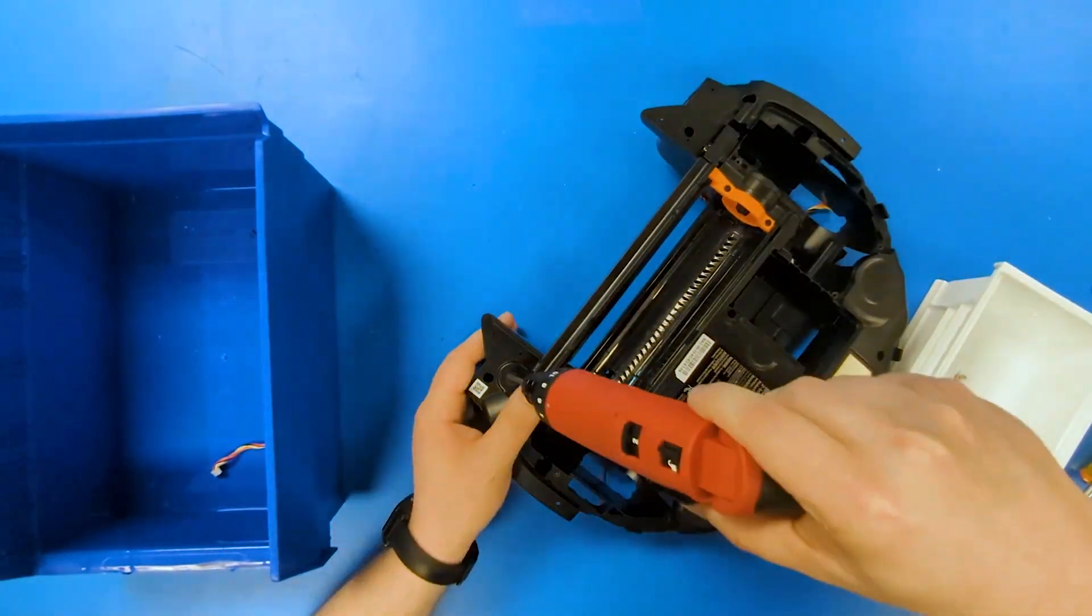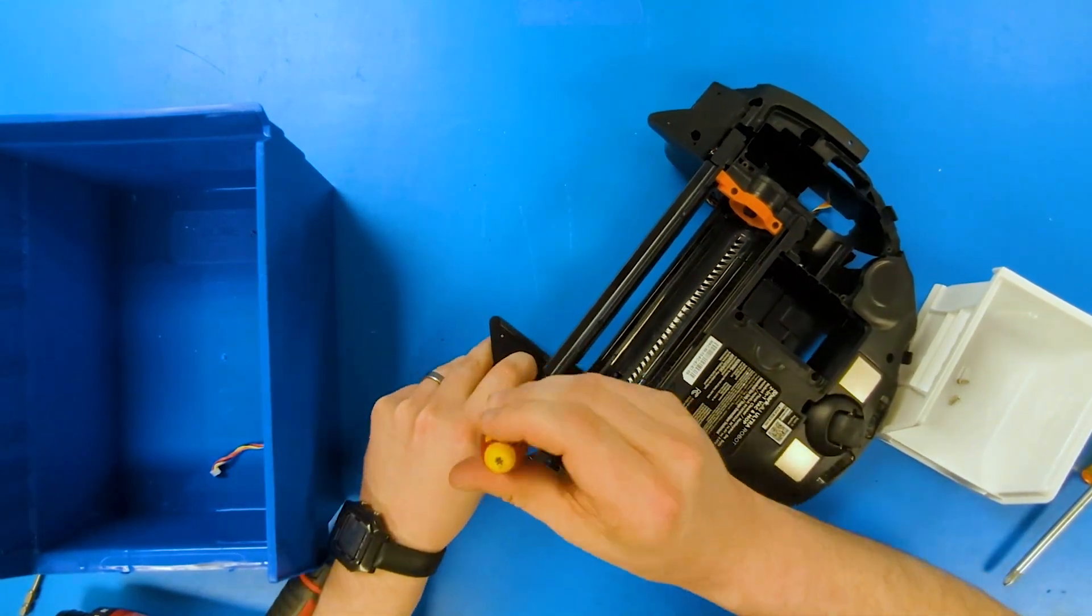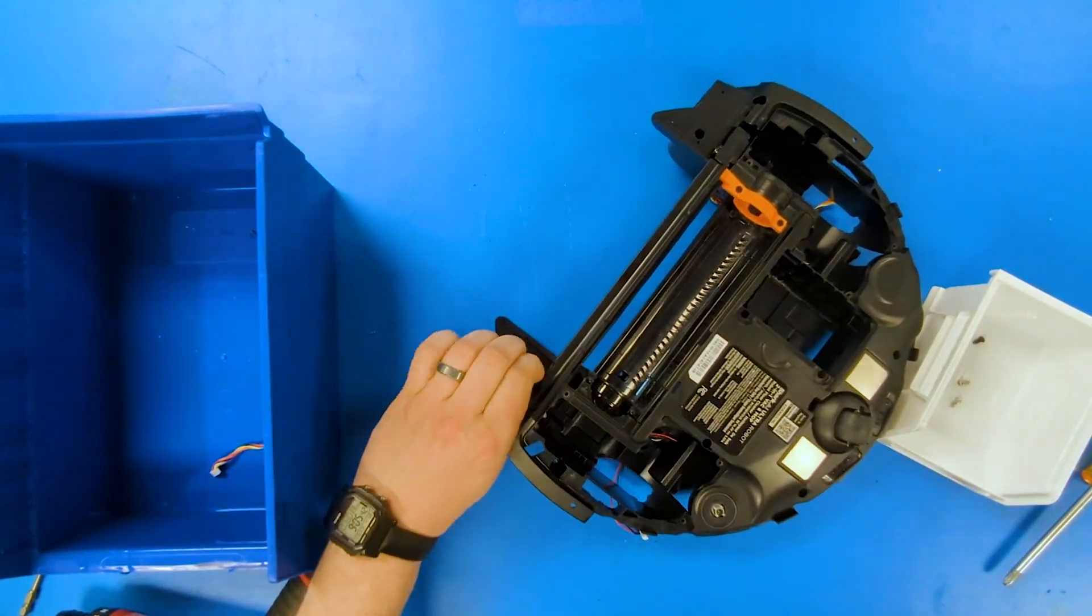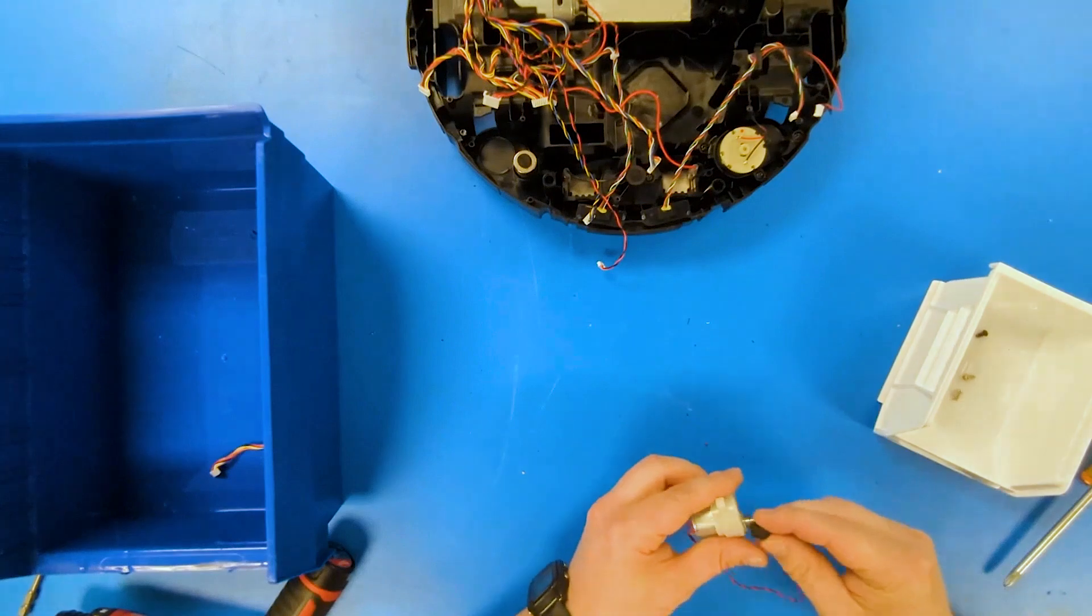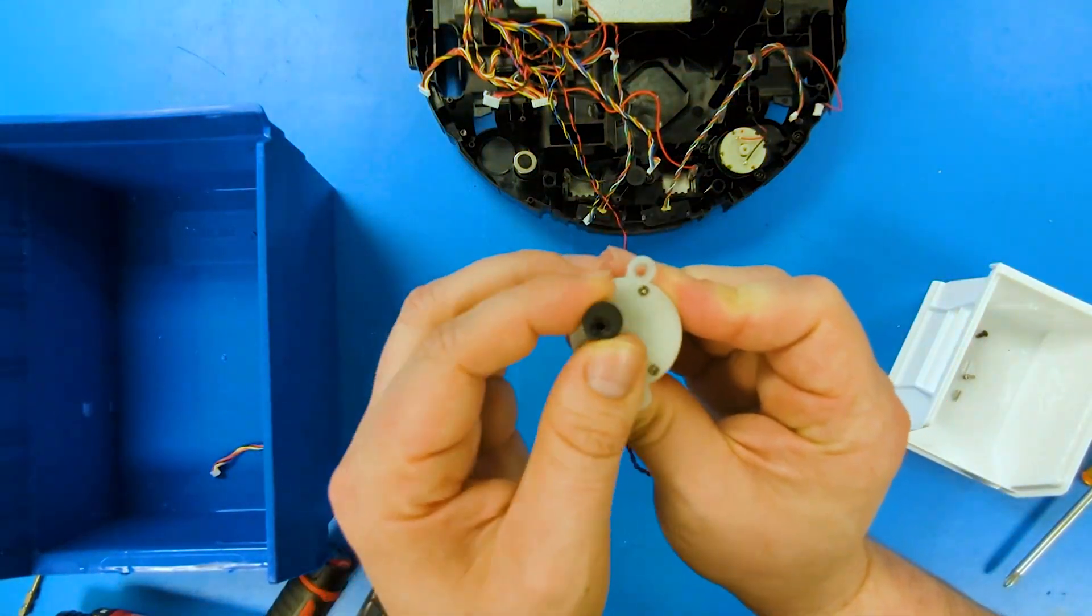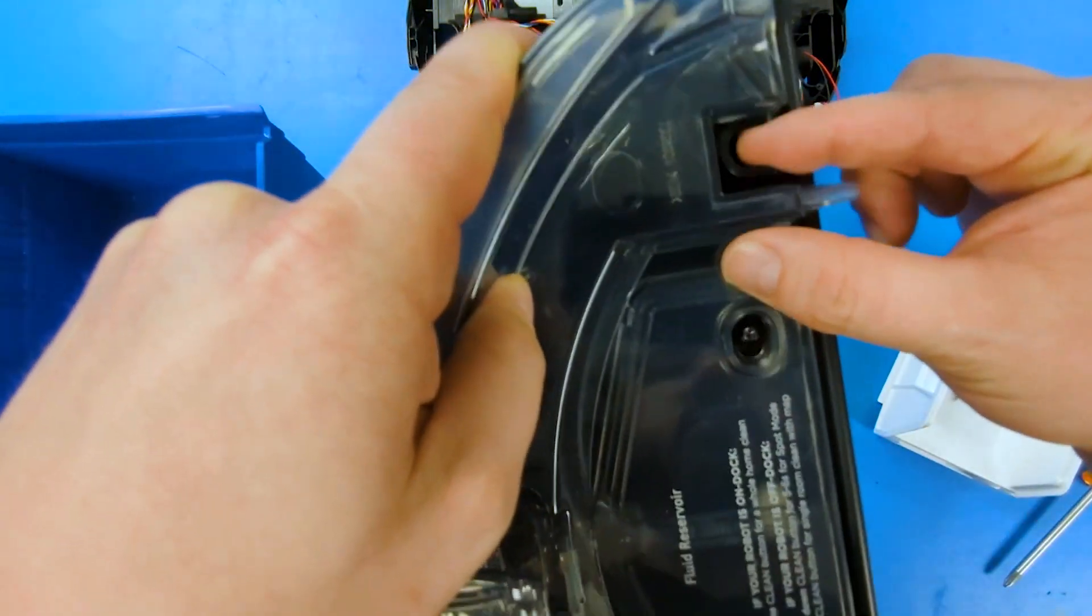This small piece that we're removing right now, this rocks the mop back and forth as it drives. This makes it so that you have an actual agitation motion on the mop as you move across the floor.